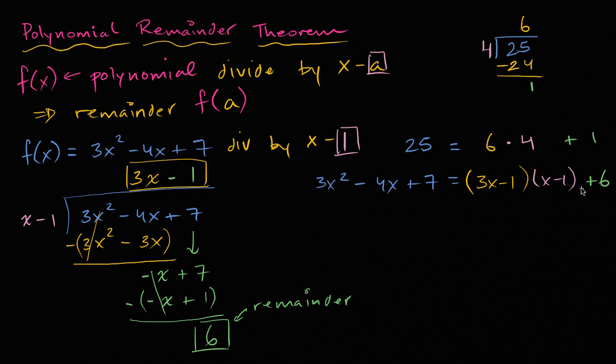And so we just did the exact same thing here, but we just did it with expressions. Once again, I haven't started the proof yet. I just wanted to make you feel comfortable with what I just wrote. If I divided this expression into this polynomial, and I were to get this quotient, that's the same thing as saying this polynomial could be equal to 3x minus 1 times x minus 1 plus 6.